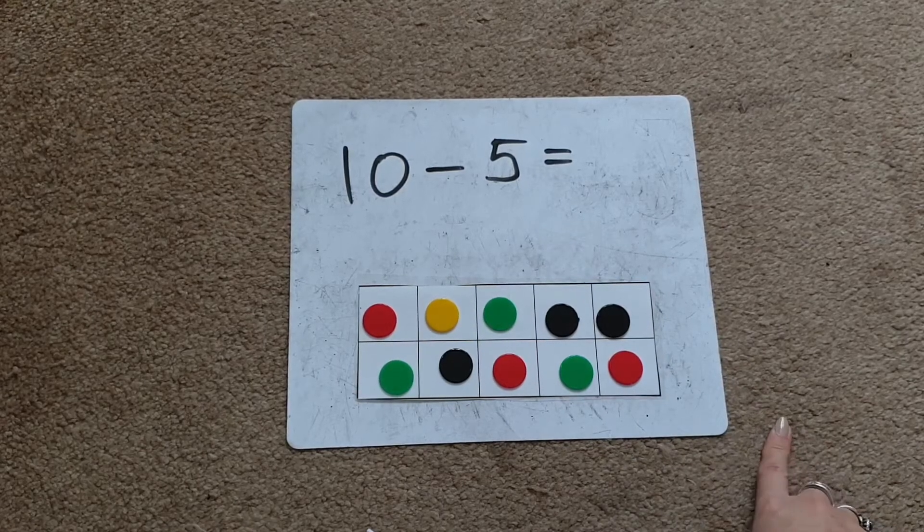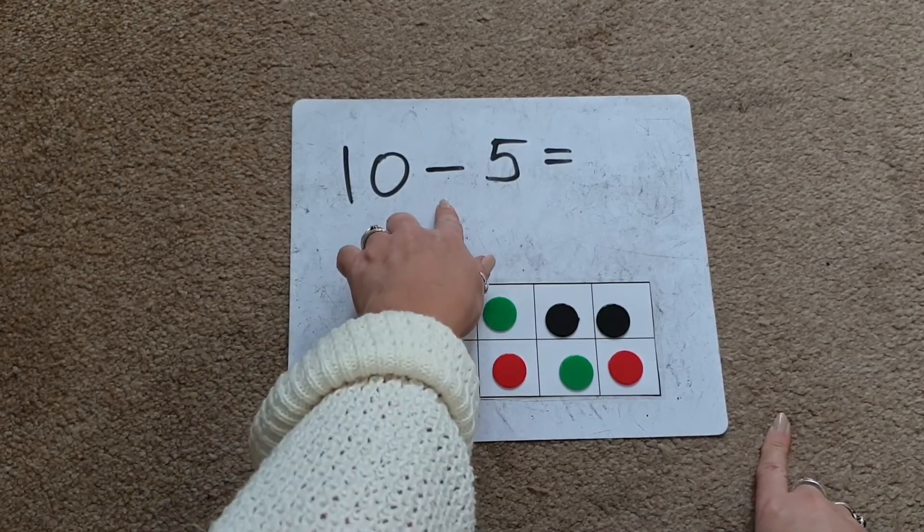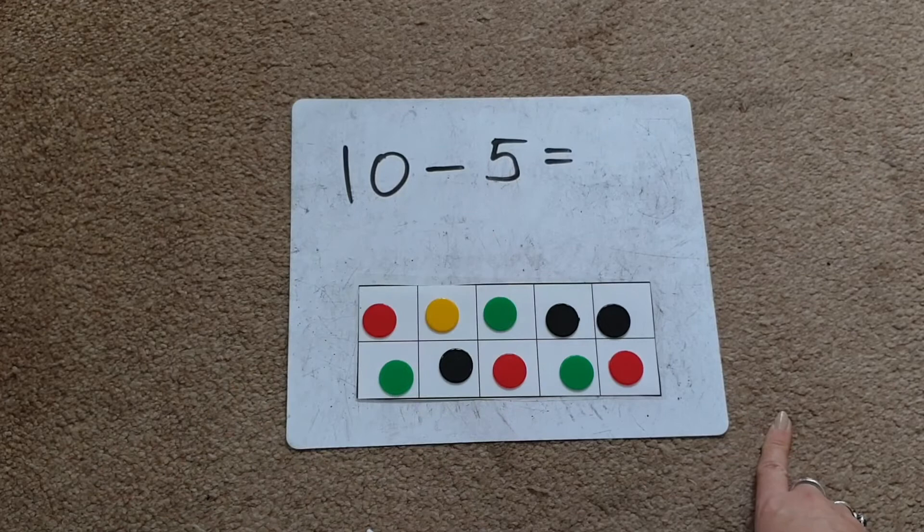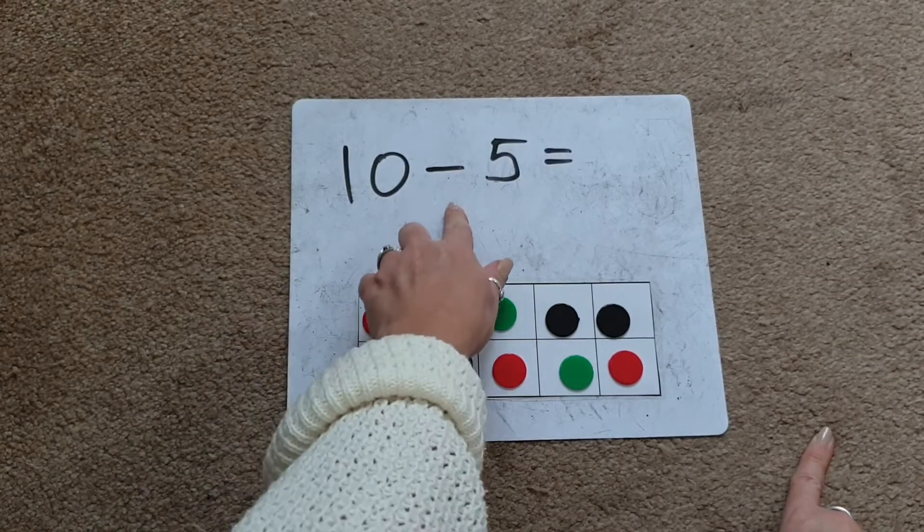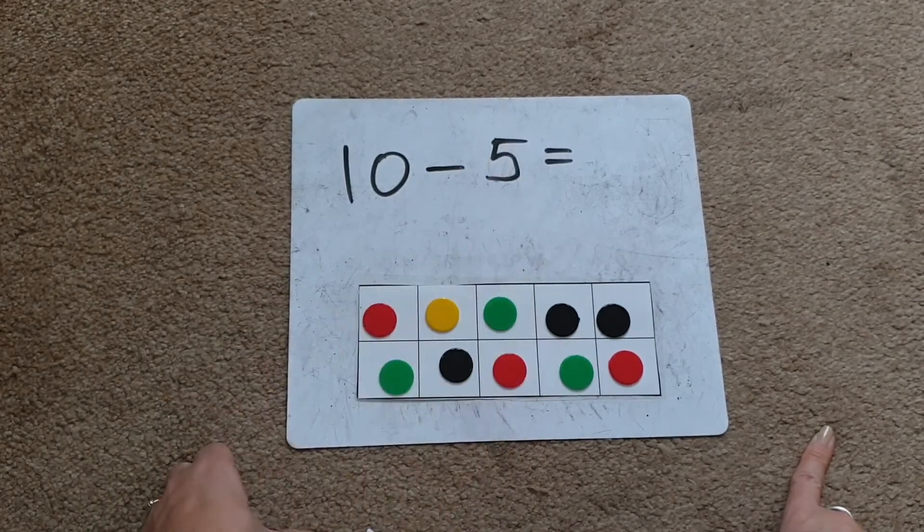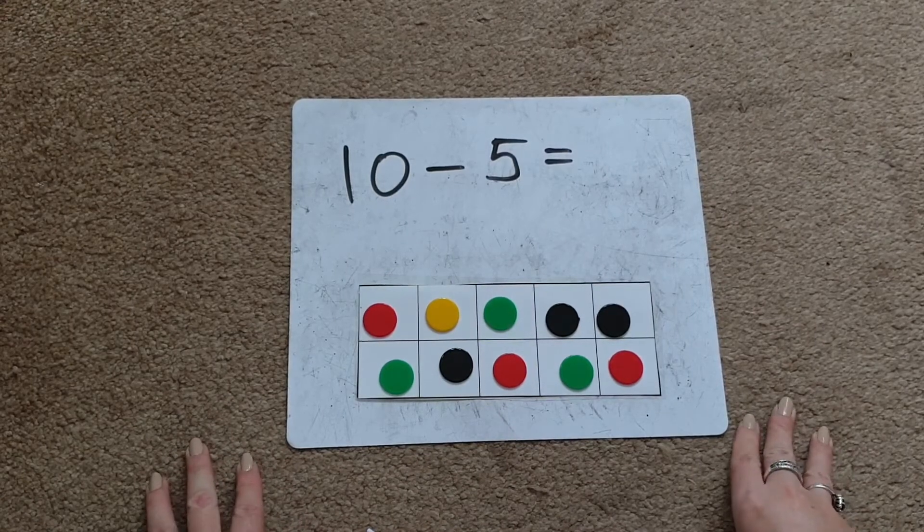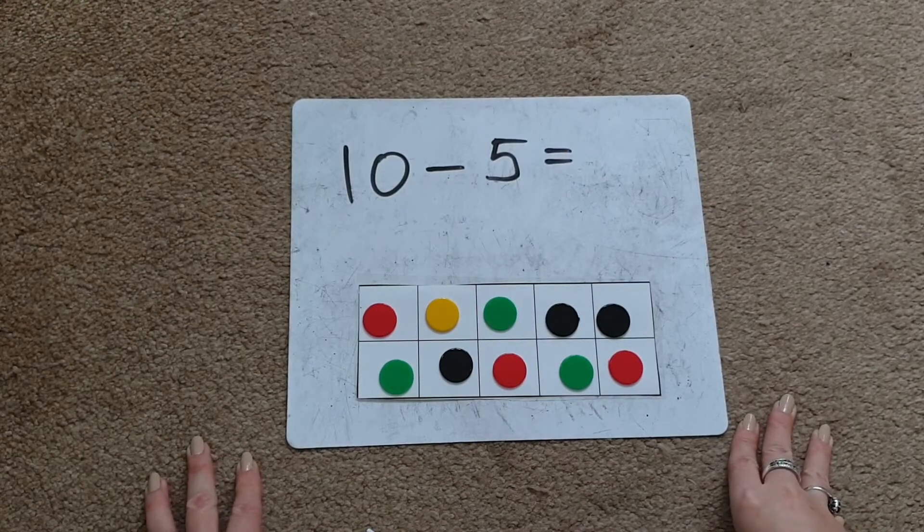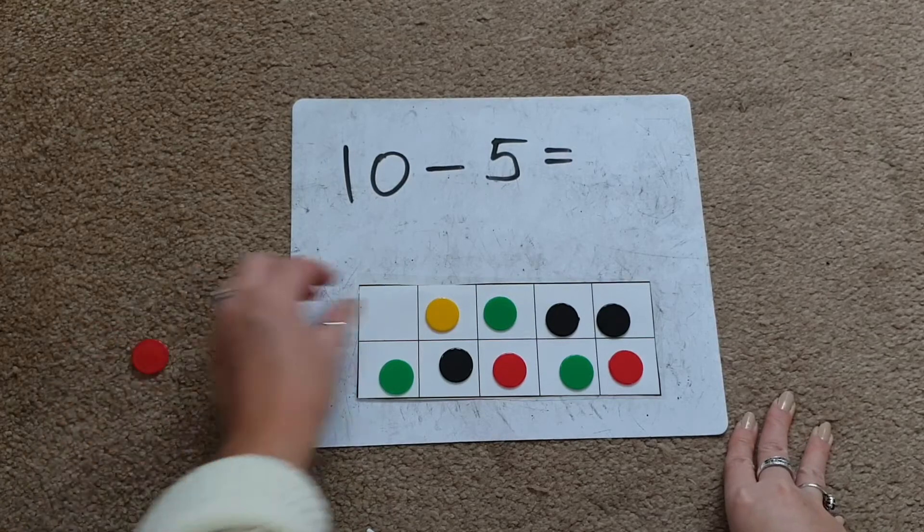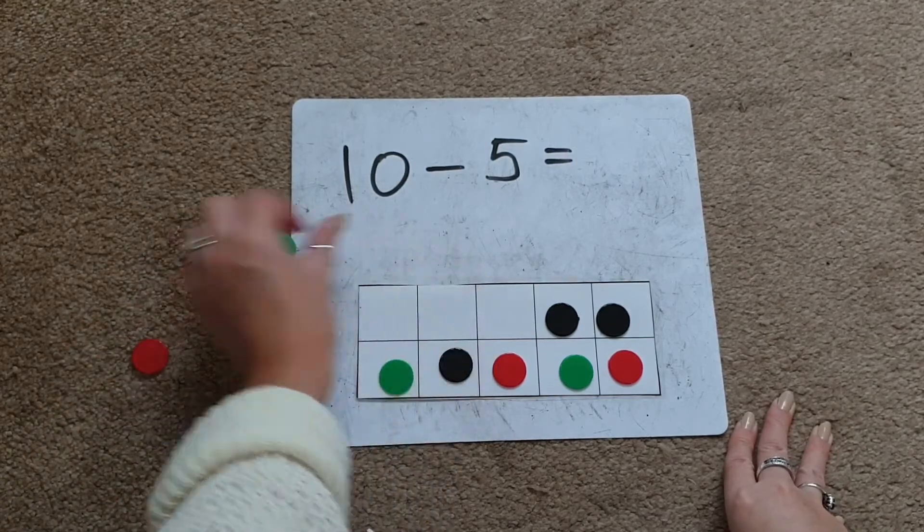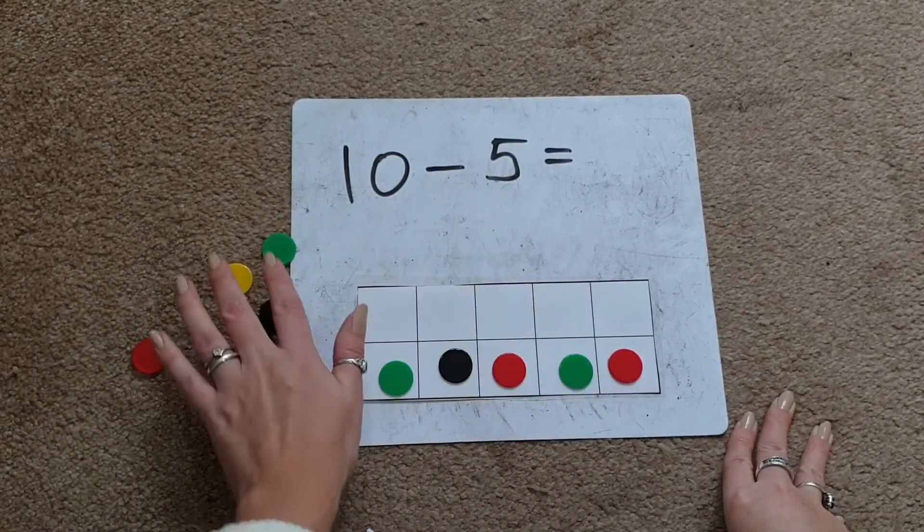And then we would talk about the symbol 'taken away,' which actually means we're taking objects away. So we would take away 5. We're going to actually physically take away 5 of our counters that we have on our 10 frame: 1, 2, 3, 4, 5.